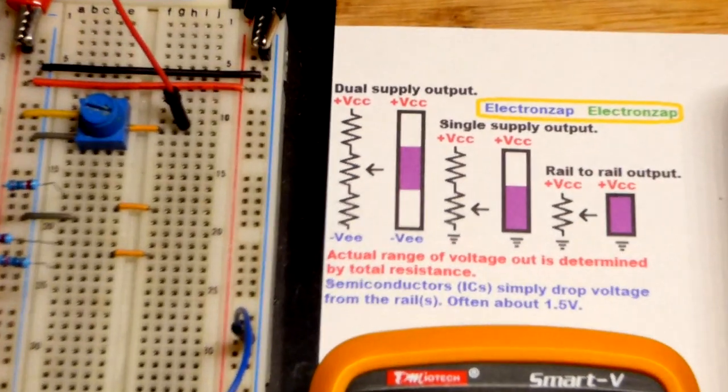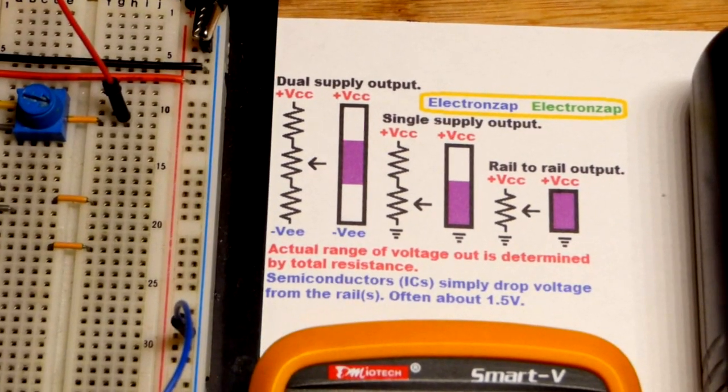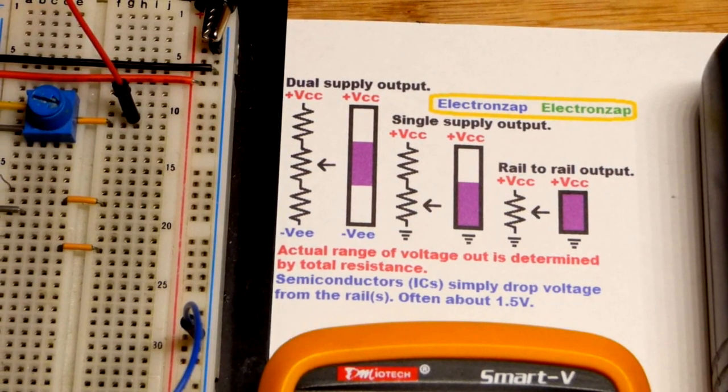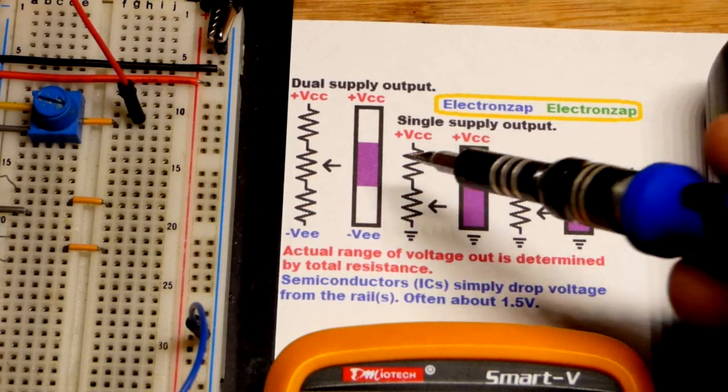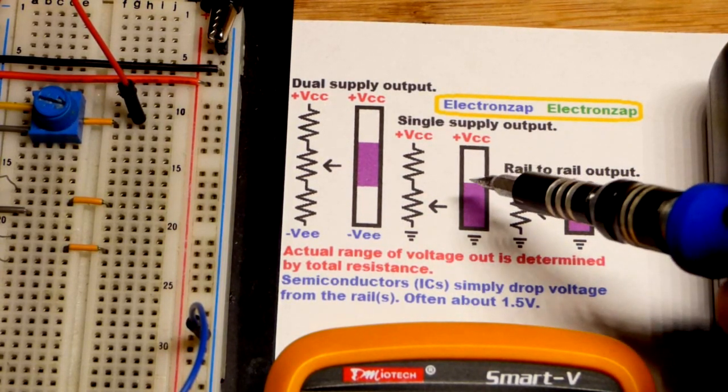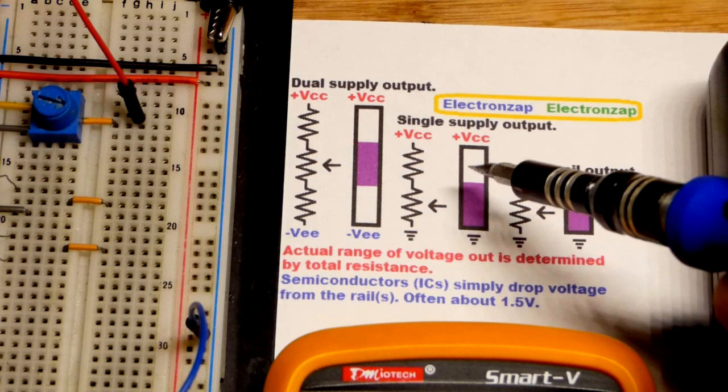So single supply. The 555 timer is the most common integrated circuit that people use. And most of them are a single supply output. The NE555, the SE555.